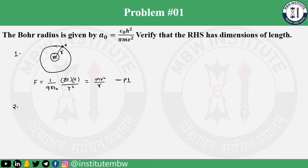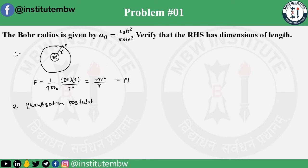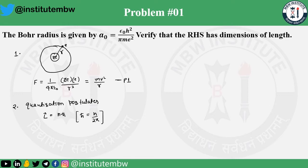Now Postulate 2 is the quantization postulate. In the Bohr model, the angular momentum is quantized as L = nħ, where ħ is the reduced Planck constant equal to h over 2π, and n can be 1, 2, 3, and so on. This is Postulate 2.